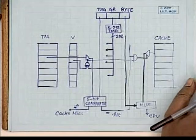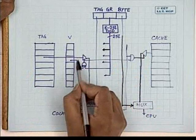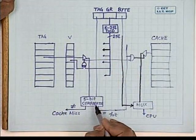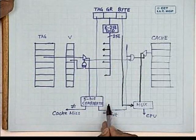A student asks whether serial comparison with only one comparator is possible for two-way set-associative cache. The answer is yes, but that requires sequential logic, expanding what can be done in one clock period into two clock periods. In cache memory design, speed is critical, so just a few nanoseconds matter. Having one or two more comparators is not very costly in VLSI implementation, so parallel comparison is preferred. With that, the lecture concludes.